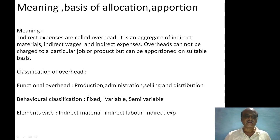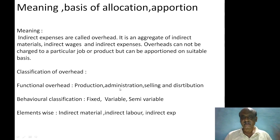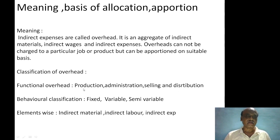If the indirect material, indirect expenses, and indirect wages are spent on production, then it will be called as the production overhead. And if it is incurred on administration, then it is called as the administrative overhead. And if it is incurred on the selling and distribution function, then it will be called the selling and distribution overhead. That is the classification of overhead.